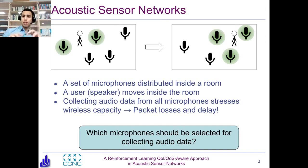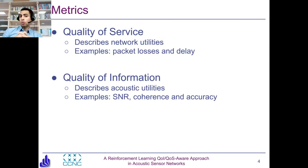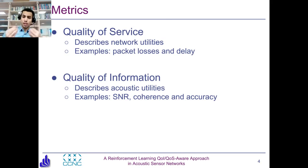In order to answer which microphone should be selected, we need to define metrics to say if a selection is good or bad. We have two metrics. First, quality of service, which describes network utilities such as packet losses and delays — these are typical metrics network designers look at. Second, quality of information, which covers acoustic utilities and generally describes the quality of sensed data from the sensors. In our case, the sensors are microphones, and we look at things like SNR, coherence, and accuracy of the collected information.